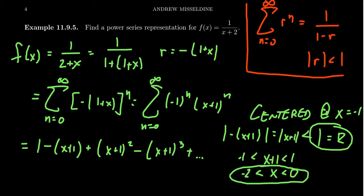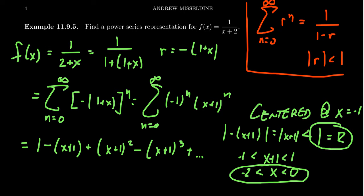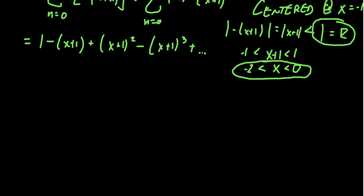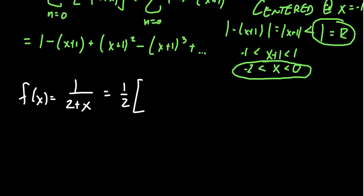Now, everything we've done is absolutely correct, but it turns out there might be a better way of doing this, which might seem a little less intuitive when you first see it. This is actually how it's recommended in the textbook, and my recommendation as well. If you have 1 over (2+x), remember we want a 1 in the denominator — so instead of subtracting, we could factor. Factoring is going to be a lot more fruitful for us. If you factor out the 2, you get (1/2) · 1/(1 + x/2).